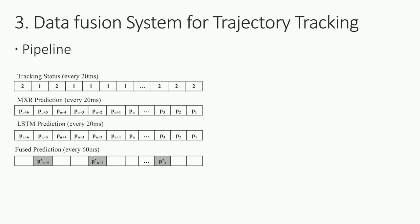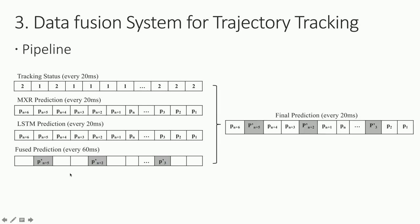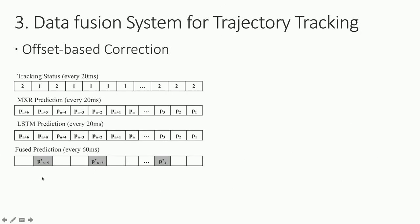Overall, we have the tracking status, the mixed reality prediction, the neural network prediction, and the fused prediction, sliding accordingly. When tracking status is high, we use mixed reality data. When tracking status is bad, we check if the ultrasound measurement has arrived: if not, we trust the neural network prediction; otherwise, we use the fused prediction calculated based on the ultrasound distance.